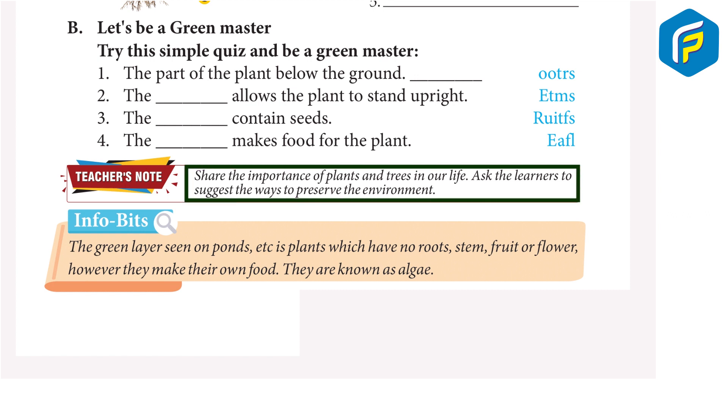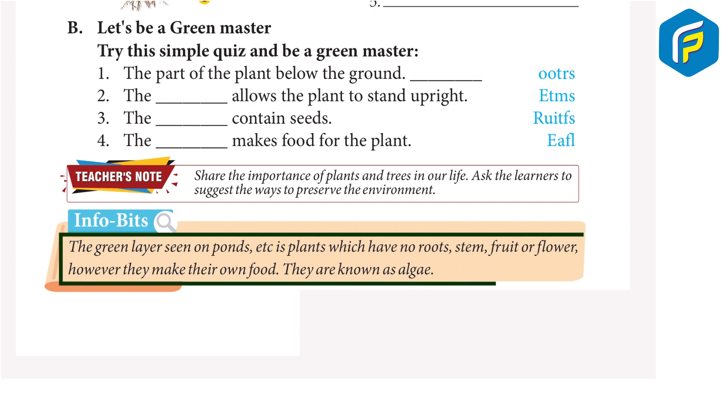Info-Bits: The green layer seen on ponds is plants which have no roots, stem, fruit, or flower. However, they make their own food. They are known as algae.